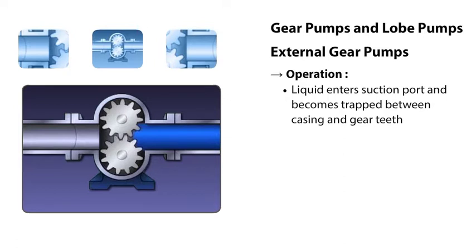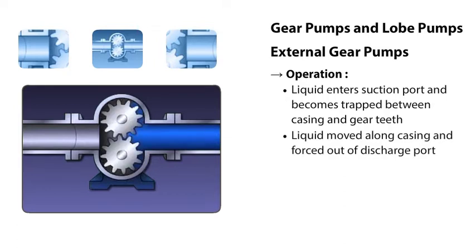During operation, liquid enters the pump through the suction port. As the gears turn, the liquid is trapped in the spaces between the casing and the gear teeth and moved along the casing. When it reaches the discharge port, it's forced out of the pump.